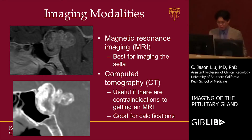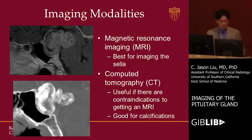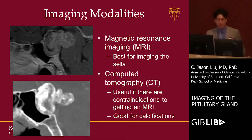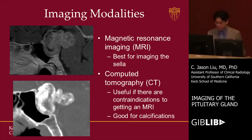As we can see from this example, there is a large sellar-suprasellar mass. We can define its borders very well, its contrast enhancement pattern, and more importantly, what it's doing to the surrounding structures. In this particular case, it's actually indenting on the brainstem, as well as having a lot of mass effect on the optic chiasm. Having that exquisite detail of what the tumor looks like and what it's doing to surrounding structures is very important. As of now, MRI is certainly the imaging modality of choice.